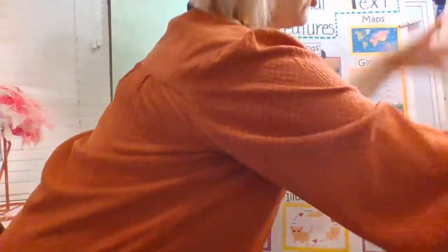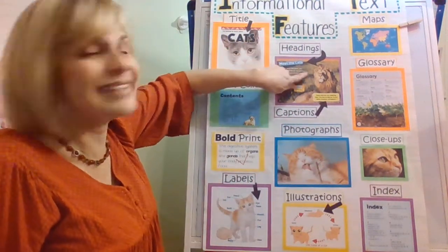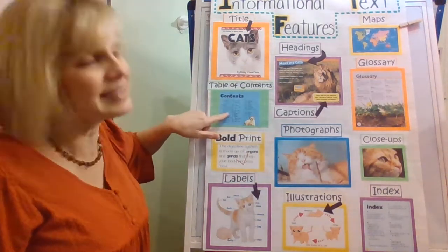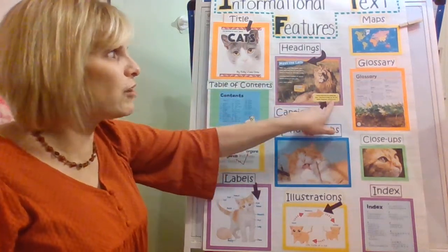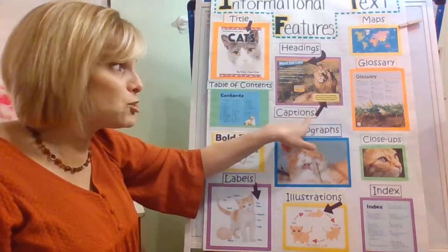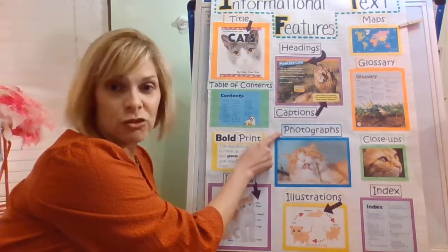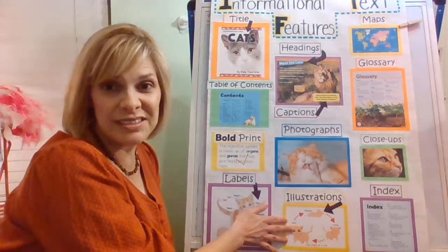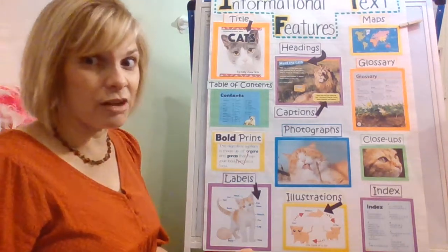Some other features are headings. The headings are going to tell you what sections are about inside the book. The headings are usually right here inside the table of contents, so you kind of know exactly where those are. Captions are a few sentences an author may tell you about a photograph — a caption will be under or around a photograph. Photographs are big pictures taken with a camera, and illustrations are drawings that the author does — pictures that the author may use inside nonfiction books.